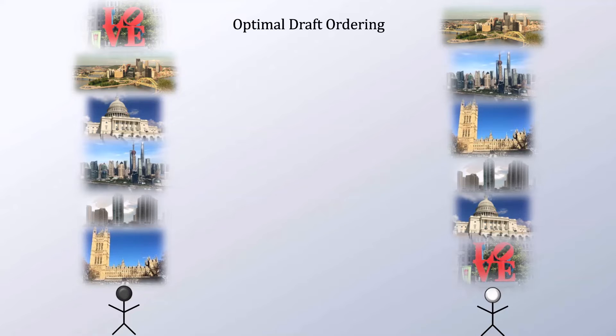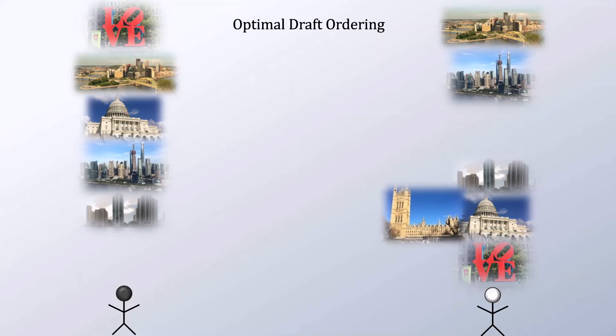The answer is that you can. In fact, there is a specific algorithm on how you should go about doing this that will always work regardless of what your preferences are or what your opponent's preferences are. As the hint implied, we must apply backward induction. That means the first thing we should think about is the last overall pick. Your opponent has that final pick, and the algorithm has us look at the least favorite choice of the other player — in this case you. With the final pick, your opponent is going to choose London, England.